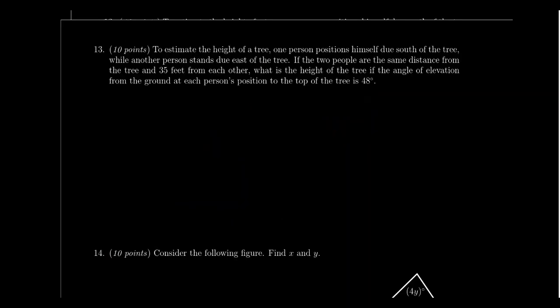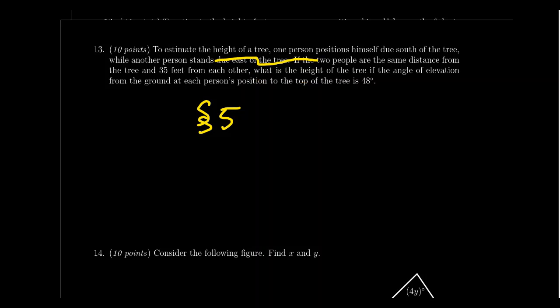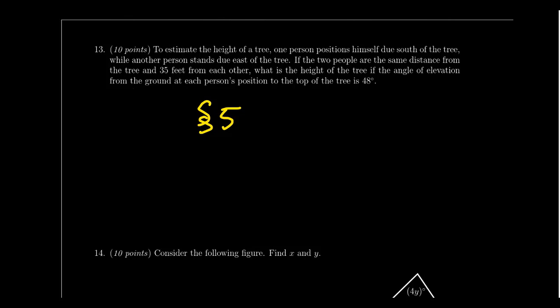Question number 13 is a story problem involving right triangle trigonometry, similar to lecture 5 material. Unlike question 11, no picture will be given — you'll just get the story. You are encouraged to draw a picture to help you process it and to show the grader your thinking. This question will have a numerical answer; give it in exact form and also approximate to three decimal places.